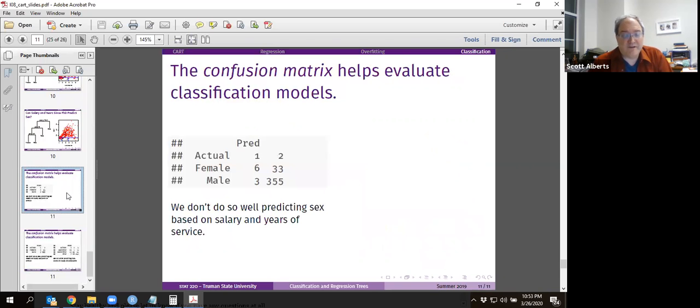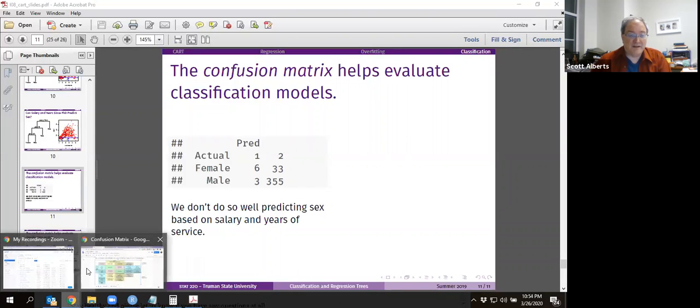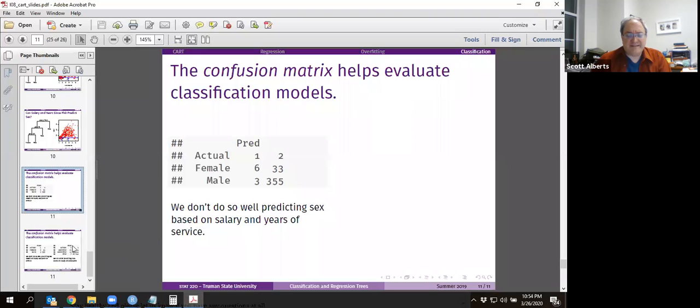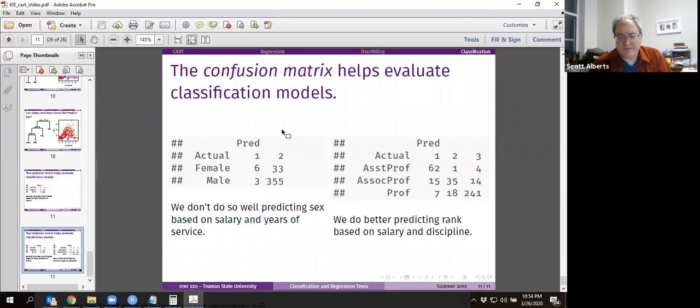We can make that confusion matrix where we see how it works. We don't actually do very well in this model predicting sex based on salary and years of service. Only six of the 39 females in the model were correctly predicted. Overall, it is better in predicting, but it's not very good at predicting the ones that we want. Going back to that earlier chart we had, what that means is it has poor positive predictive value or precision. In fact, if you wanted to predict something with this data, predicting rank based on salary and discipline actually comes out very good. This is also a good example because it has three categories, not two.